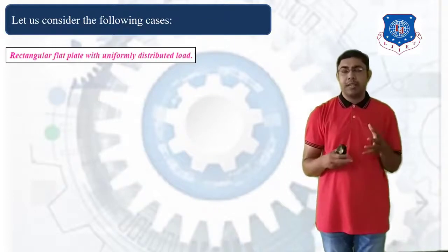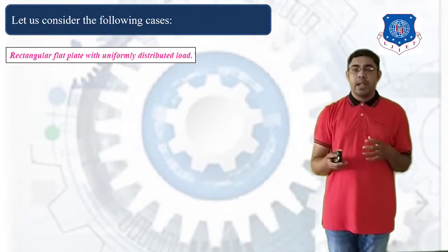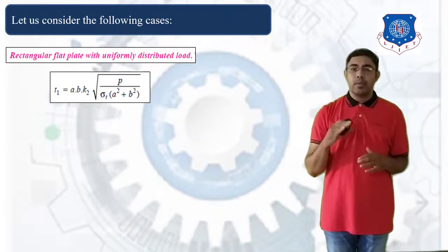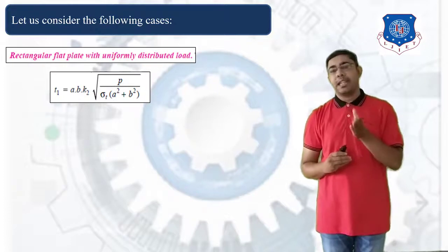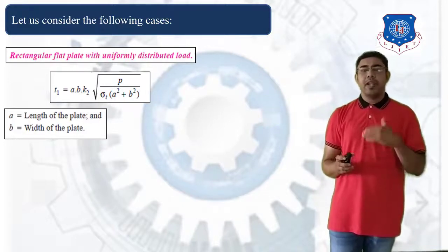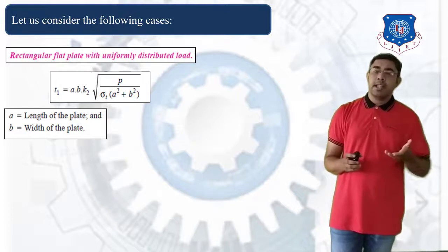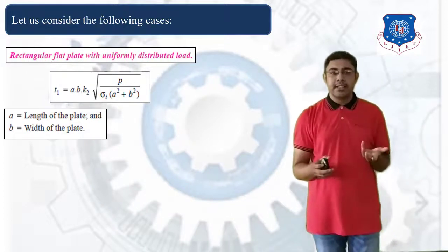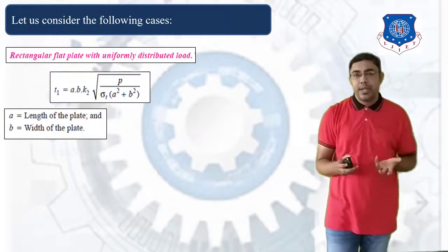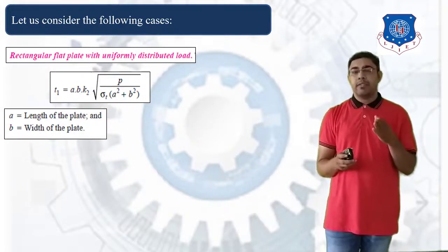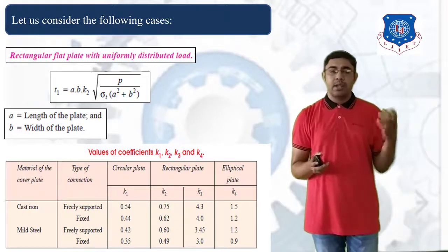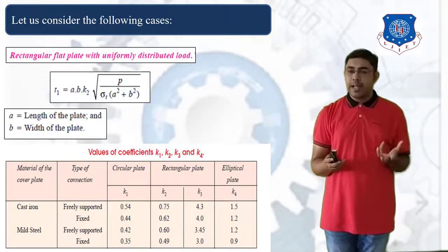The second case is a rectangular plate with uniform distributed load. For this, T1 = (A × B × K2 × √P) / (√(σT × (A² + B²))), where A is the length of the plate, B is the width of the plate, P is the pressure, and σT is the allowable design stress. The factor K2 is found from tables based on the material of the plate and the type of connection.